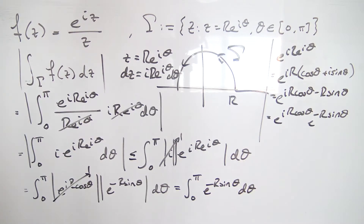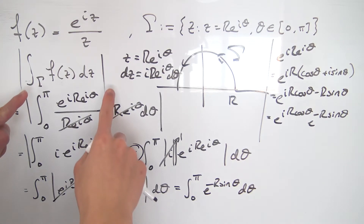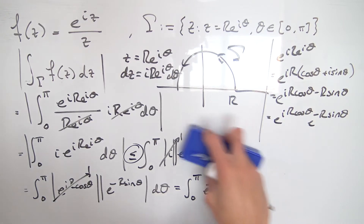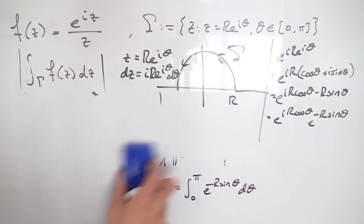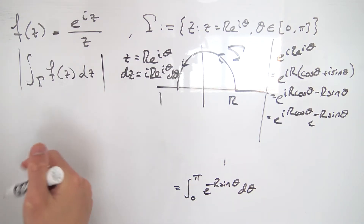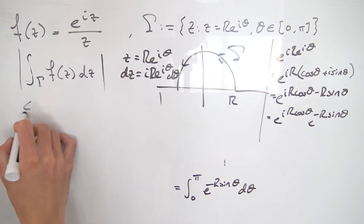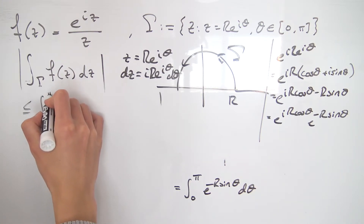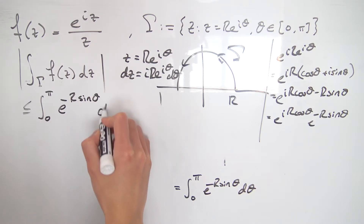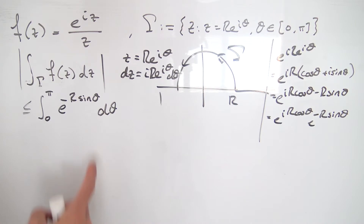Tracing back through the inequalities, what we've established so far is that the absolute value of the integral over gamma is less than or equal to the integral from 0 to pi of e to the minus r sine theta d theta. Now, integrating this directly would be difficult, so instead we'll estimate this integral further.